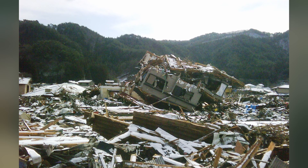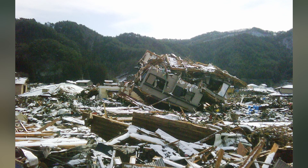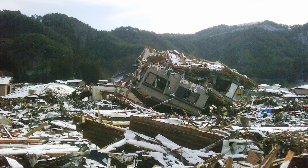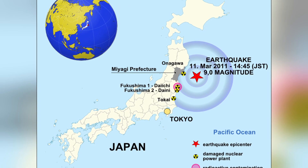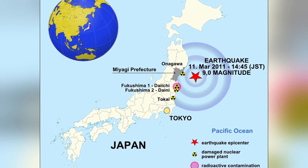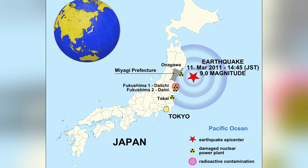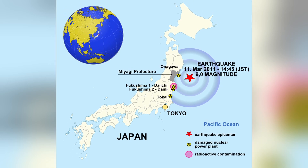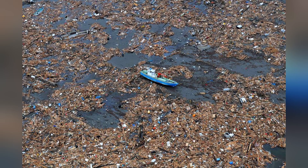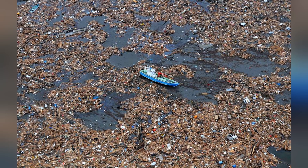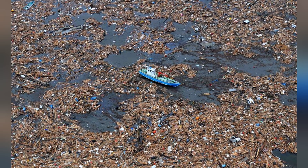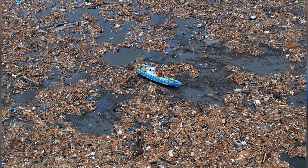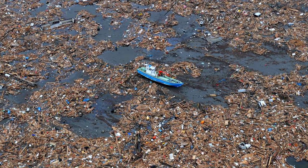The Great East Japan Earthquake of 2011, also known as the Tohoku Earthquake, was a magnitude 9.0 earthquake that struck off the northeastern coast of Japan. It triggered a massive tsunami, causing extensive damage to coastal regions, including the Fukushima Daiichi nuclear power plant. The disaster resulted in the loss of around 16,000 lives and caused a nuclear crisis.